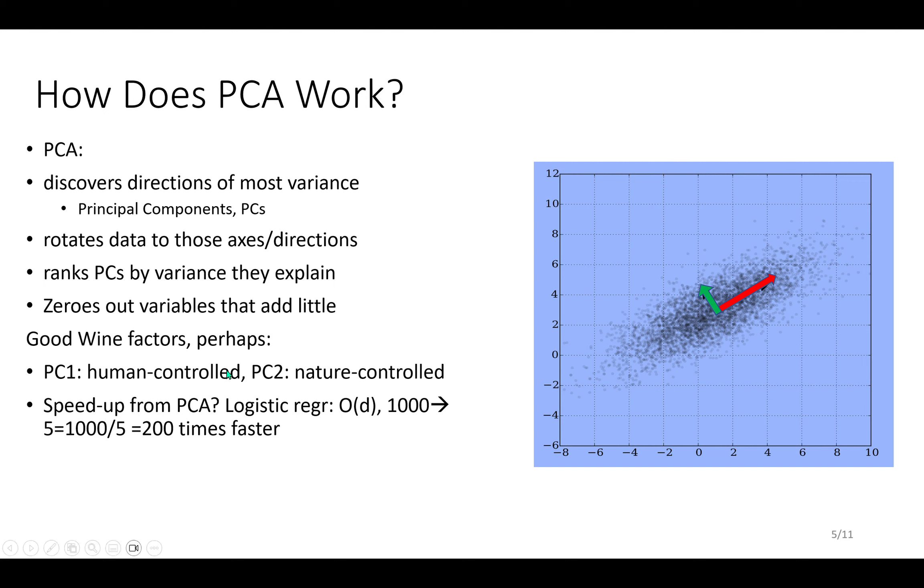These principal components are like combinations of real variables. For example, maybe you're trying to make good wine. Perhaps the most important thing is stuff that you can control as a human: the type of grape, maybe you can change the soil, control the acidity. But then nature will control other things, so that's the second PC. A big reason why you want to use PCA is computational efficiency.